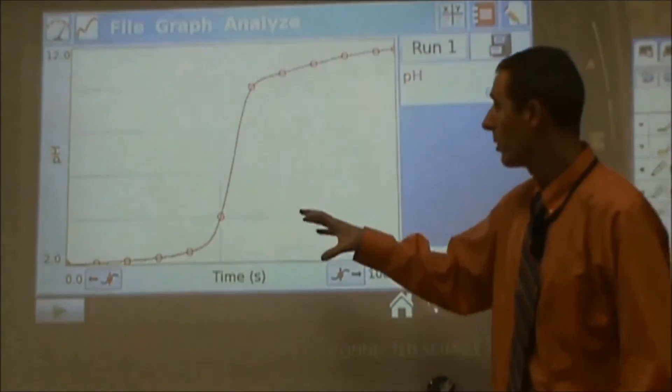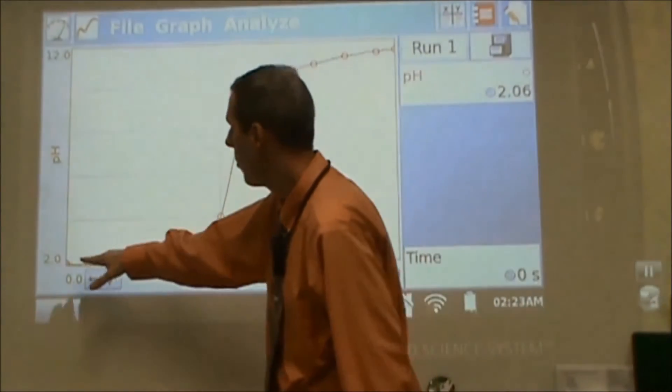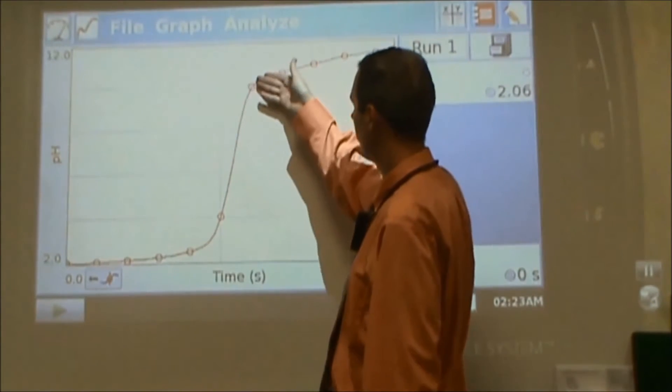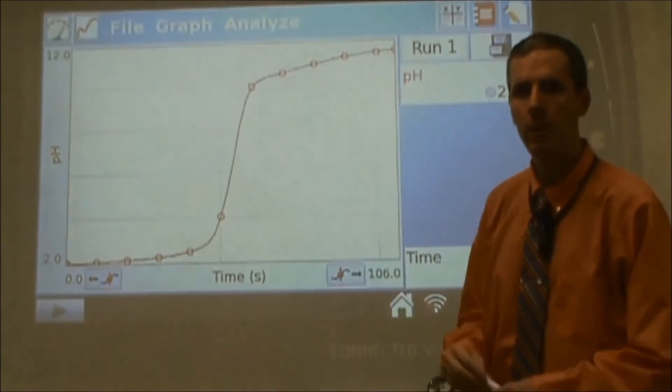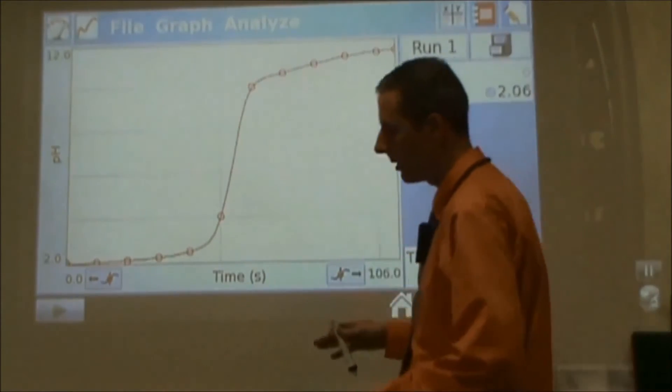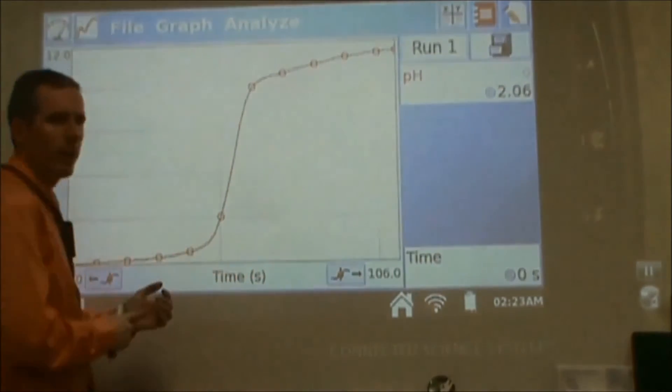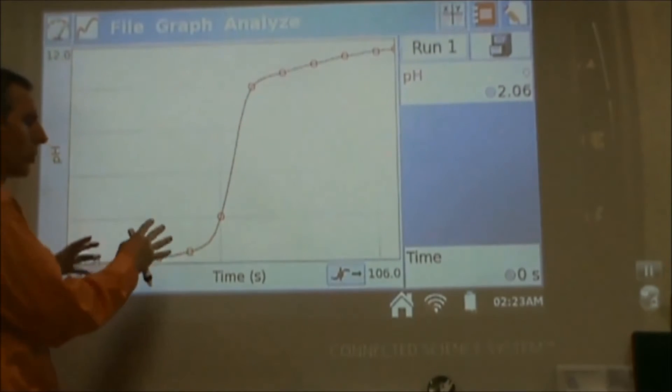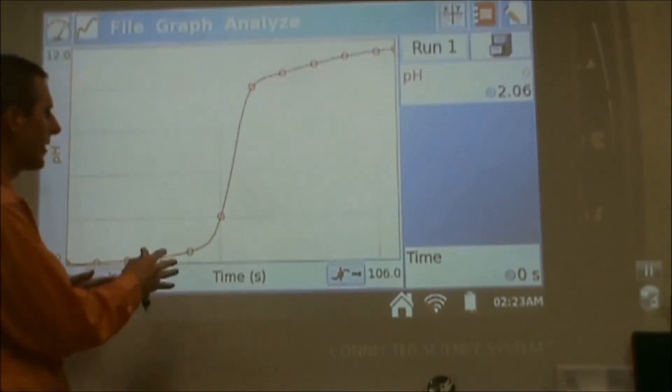So our goal here now is to go through this curve and talk about why the pH is relatively constant. Then all of a sudden we see a dramatic shift in pH, and then it levels off again to become constant. What's going on there? Because this is combining a logarithmic scale with a linear scale. And we should take some time to kind of go through why this is what it is.